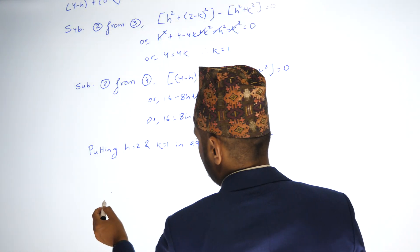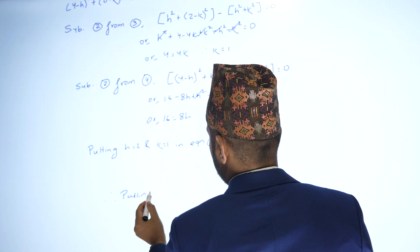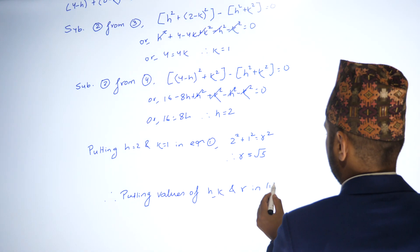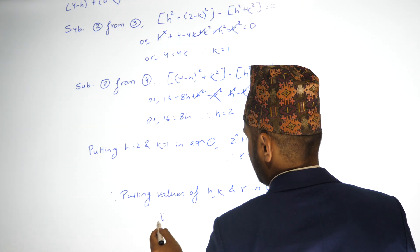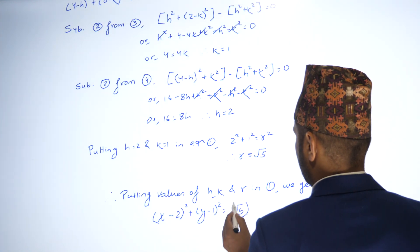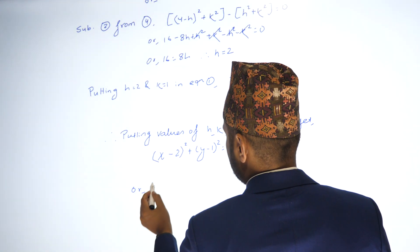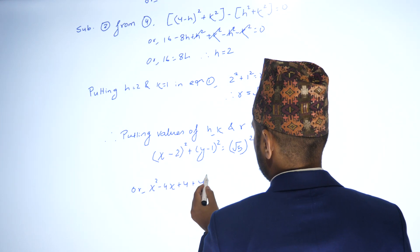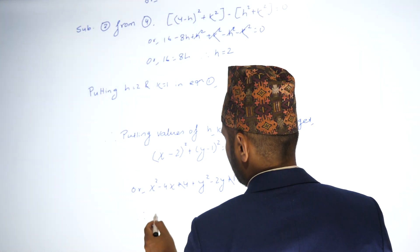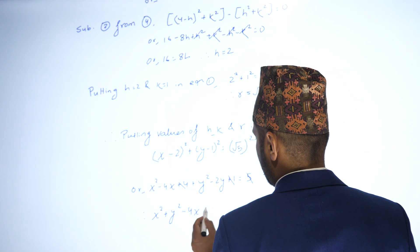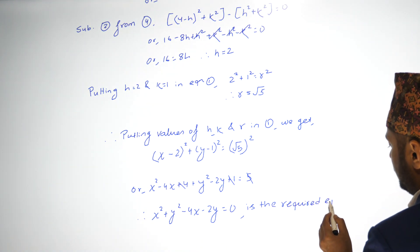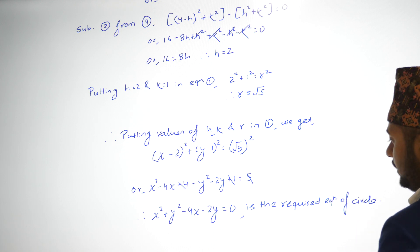Therefore, putting values of h, k, and r in equation 1, we get (x minus 2) squared plus (y minus 1) squared equals (root 5) squared. Expanding: x squared minus 4x plus 4 plus y squared minus 2y plus 1 equals 5. The constants 4 plus 1 cancel with 5, so the required equation of the circle is x squared plus y squared minus 4x minus 2y equals 0.